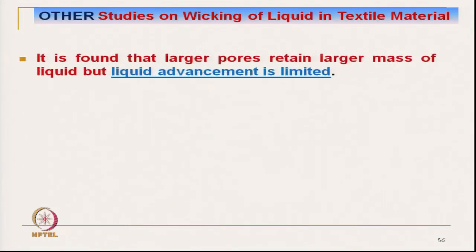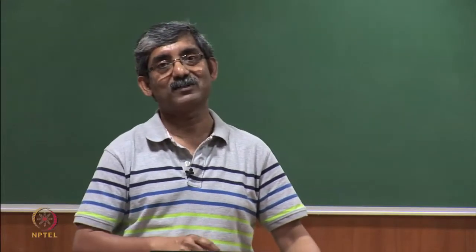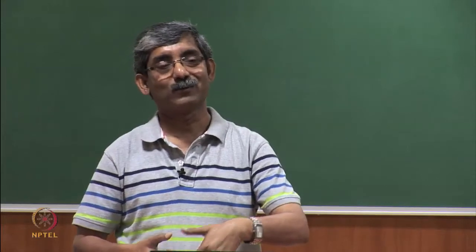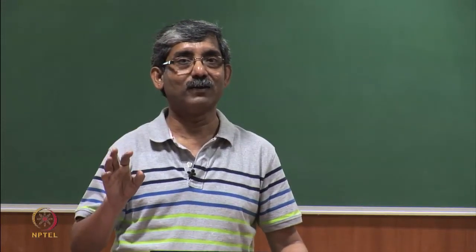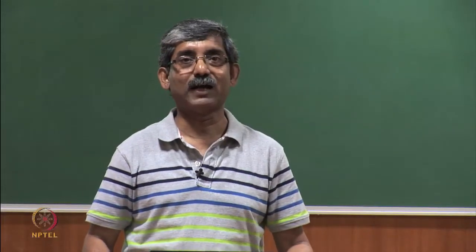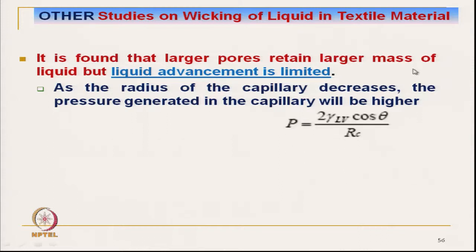Different studies available on wicking characteristics show that a larger pore retains a larger mass of liquid. But if pore size is more, it will limit the advancement of liquid flow due to the higher pore diameter. As the radius of the capillary decreases, the pressure generated in the capillary will be higher. So we need high porosity, but the pore diameter should be small.